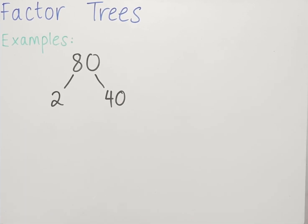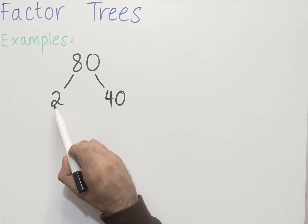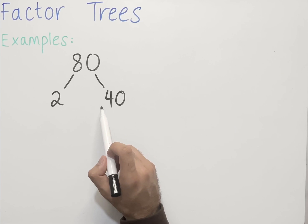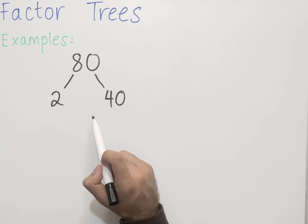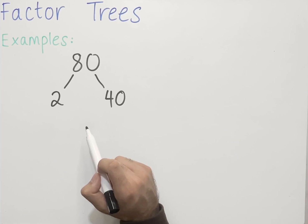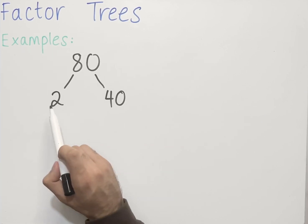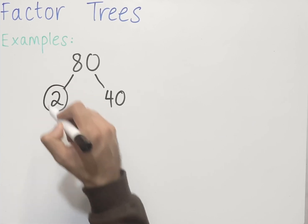We then look at the two numbers on the end of the branches and we see whether they're prime numbers. If they're prime numbers, we circle them. If they're not prime numbers, we carry on factorizing until we're left with prime numbers. So 2 here is a prime number, so let's circle it.